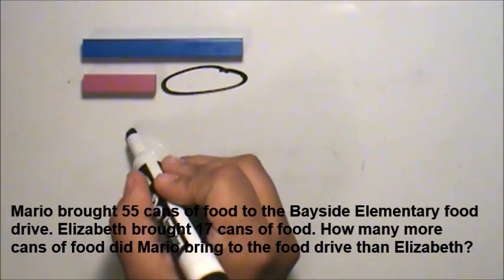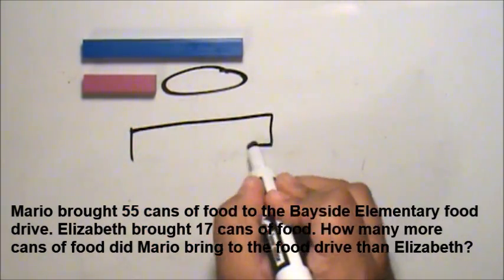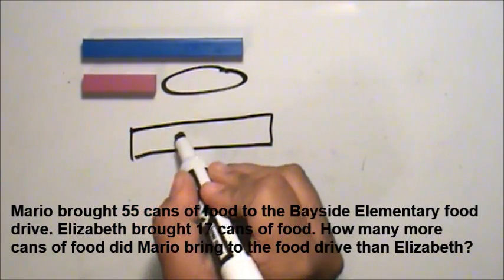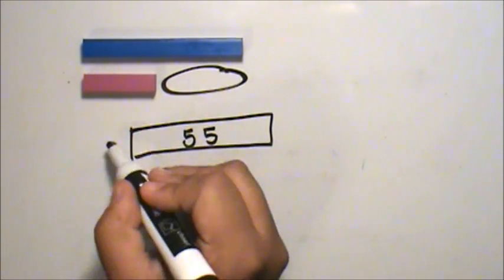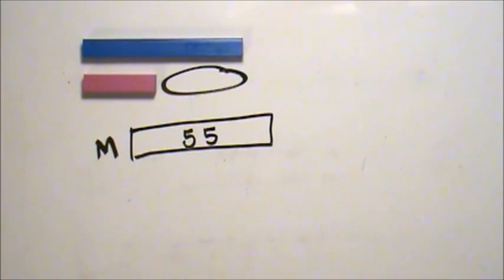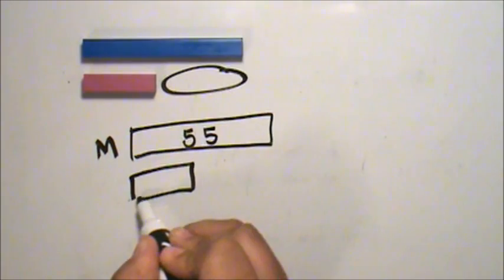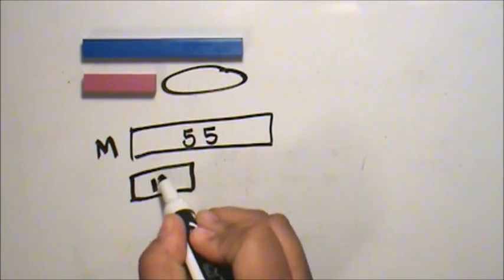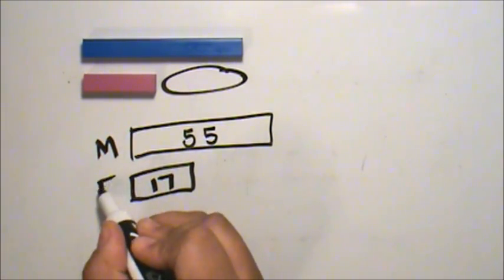First I draw Mario's 55 cans. I write the quantity and I label it. Then I draw Elizabeth's 17 cans. I write the quantity and I label it.